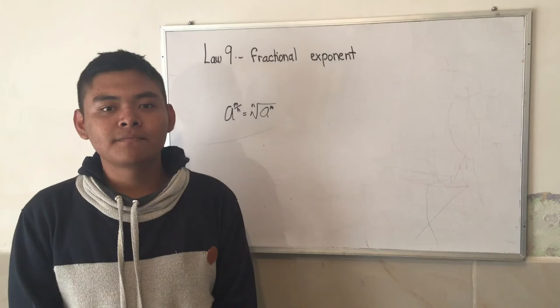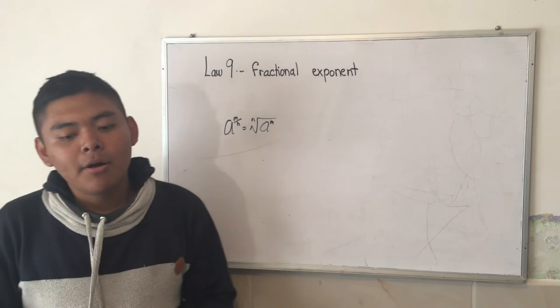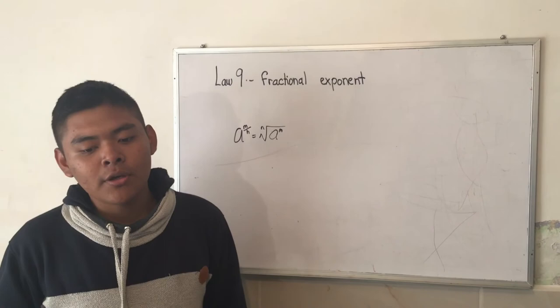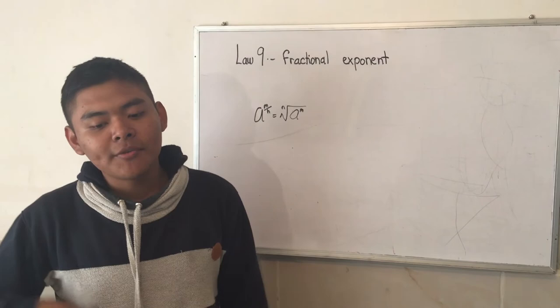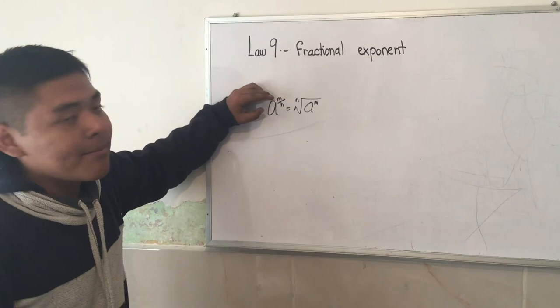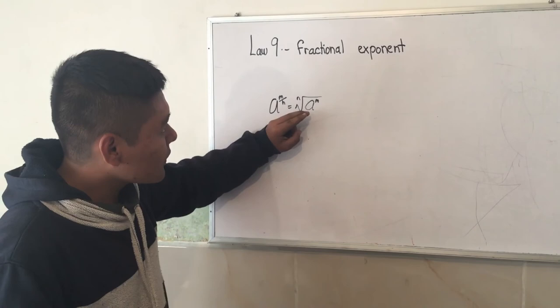Finally, we have the ninth law: fractional exponent. A potency that has a fraction as an exponent is resolved by transforming it into an nth root, where the numerator remains as the exponent and the denominator represents the root index. This is A to the M over N equal to the Nth root of A to the M.